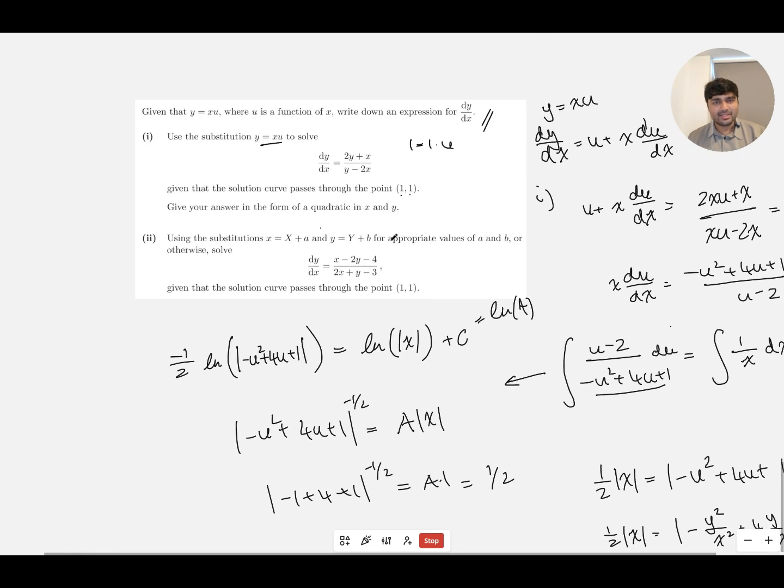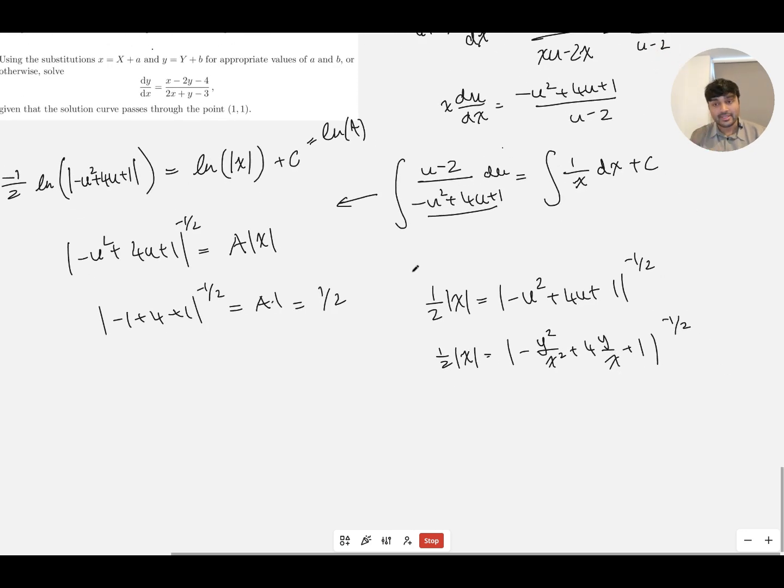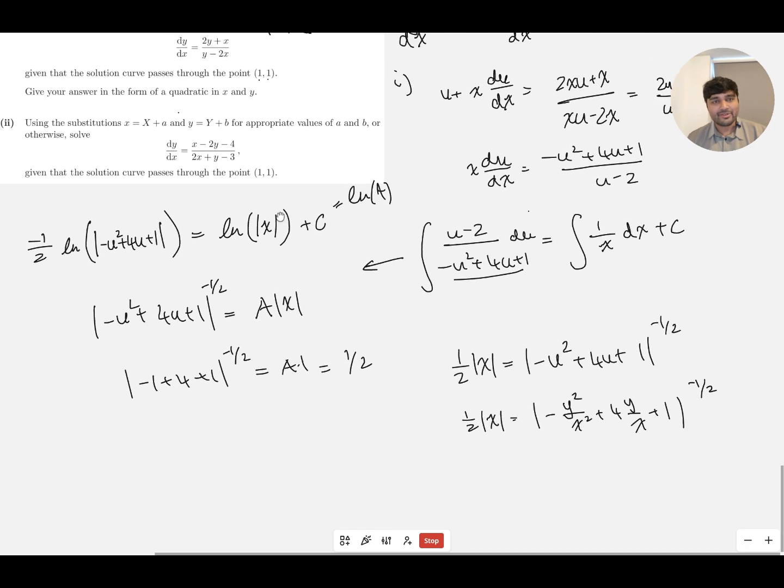And the question says to give our answer in a quadratic in terms of x and y. I'm just a bit hesitant to get rid of these absolute values because we've just got to be careful. I don't want to have to think about plussing, minusing, square rooting, negative numbers, all this sort of stuff. So I'm just going to be very careful here.